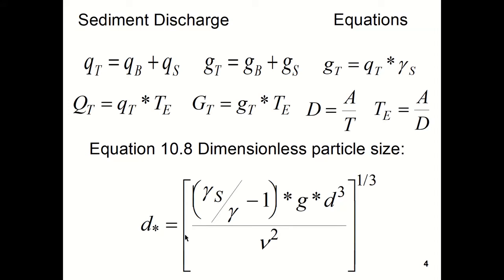The equations: the sediment transport totally per unit width would be the sum of the bed load plus the suspended load. The sediment transport per unit width, weight-wise, dry weight, would be the transport of the bed load plus the transport of the sediment load.